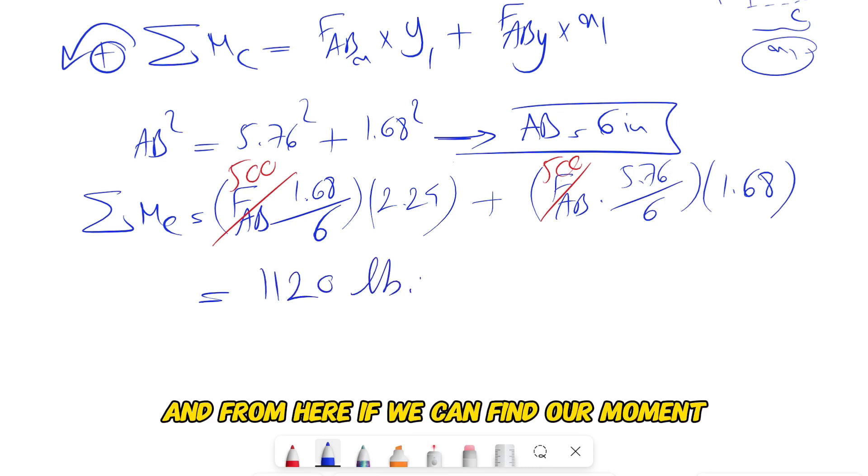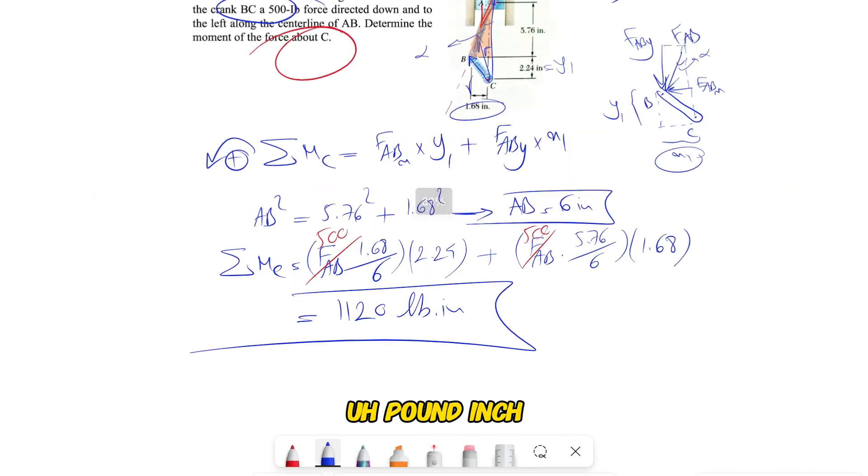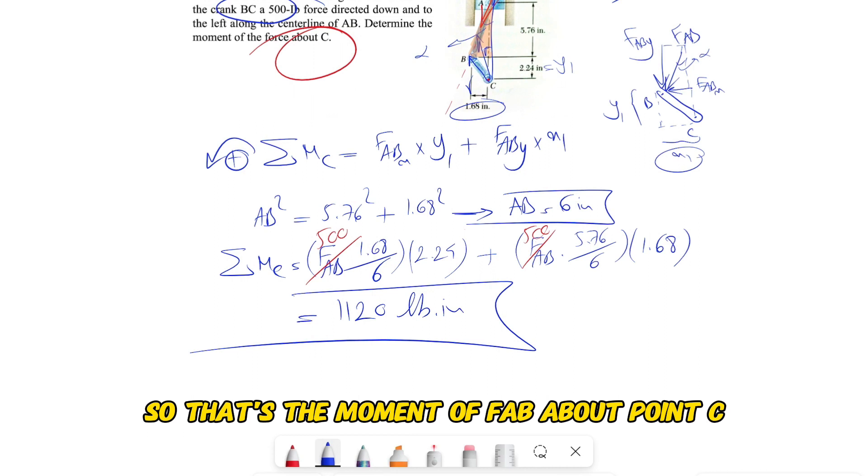And from here we can find our moment: 1,120 pound-inches. So that's the moment of FAB about point C.